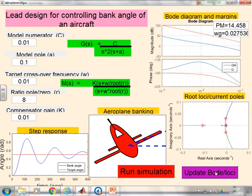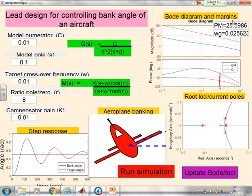Update the Bode and Loci. Press here. Now, the phase margin has now gone to 25. The gain crossover frequency has gone to 0.025. Is that better? Is that worse? Well, I'm not going to tell you. You have to decide.